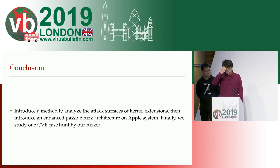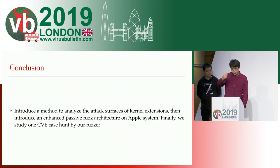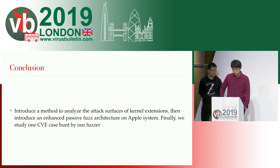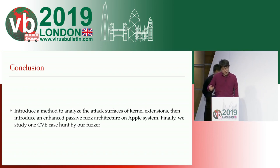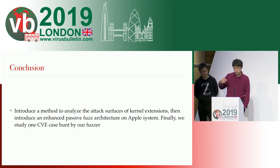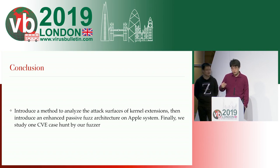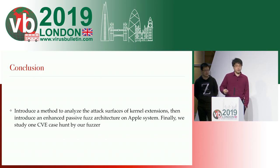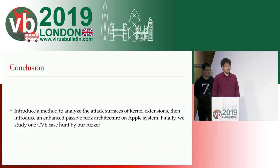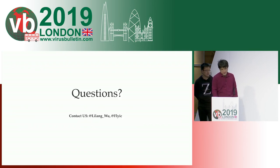Okay, this is our conclusion. First, we introduced the methodology to analyze the attack interface of kernel extensions by static analysis. Then we introduced the enhanced passive fuzzing architecture in macOS towards the kernel itself and driver extensions. Finally, we studied the vulnerability we found by our fuzzing and code review. These are our final slides. Thank you.